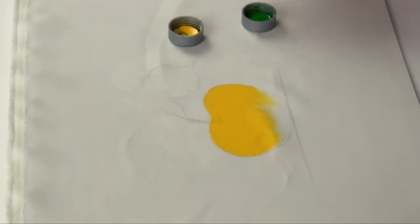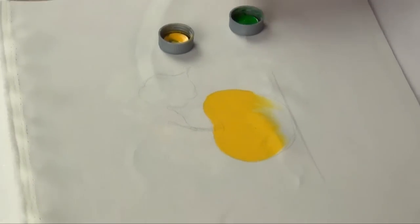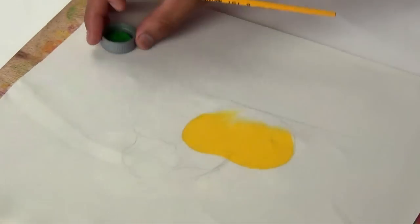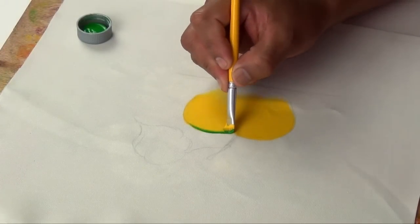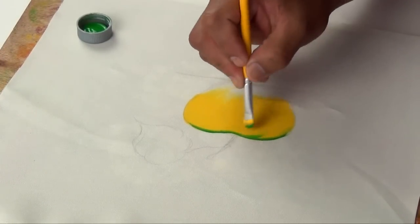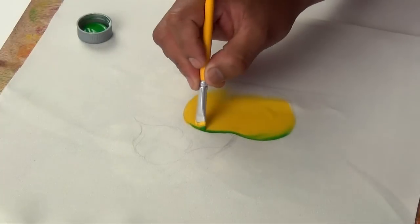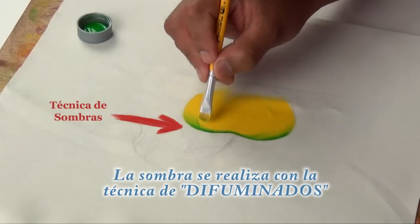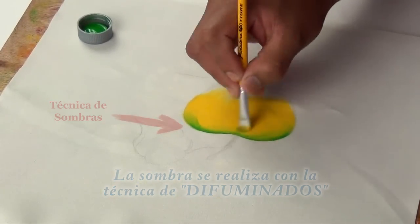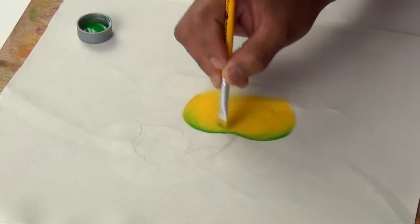Now we're going to work with green, moss green. We'll work the edge of the apple, the entire upper part, all of this area here. And we'll add a little shadow, gently only, to give it that greenish tone that the apple also has.